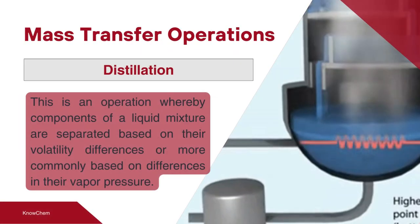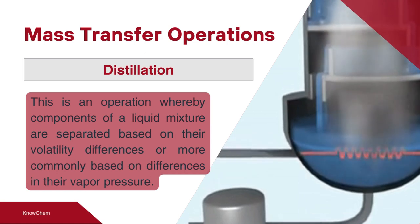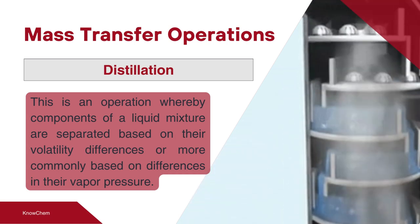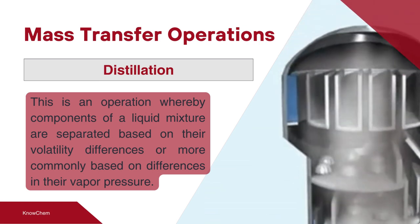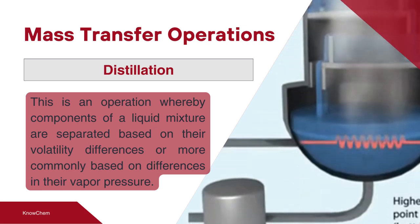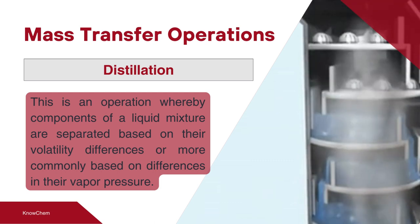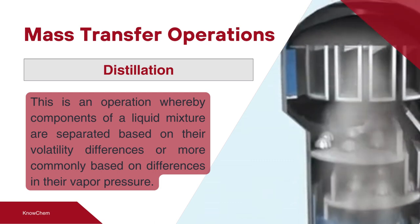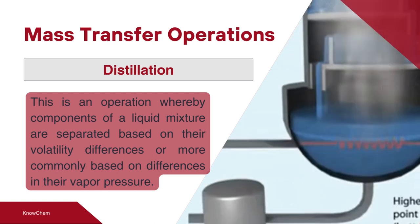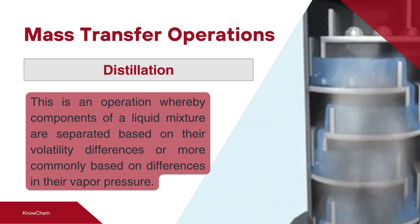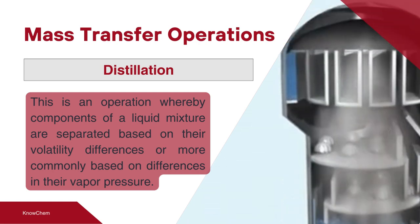The third and one of the most important types of mass transfer operation, popularly known as the king of operations, is distillation. In distillation, when we have a mixture of liquids that need to be separated or we desire to obtain a pure product, distillation is carried out. The separation of liquids takes place on the basis of their boiling point difference, or more precisely, the difference in vapor pressure. Another criterion governing separation is relative volatility, which will be covered in detail in the coming series.